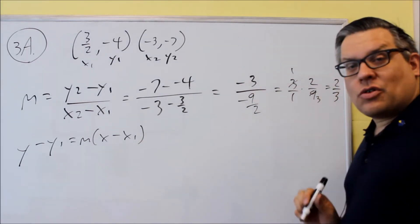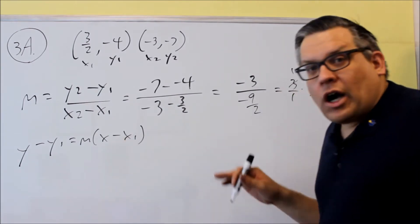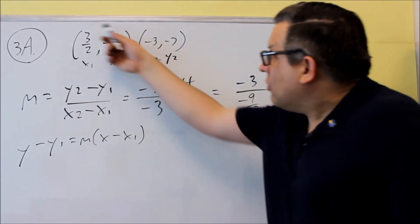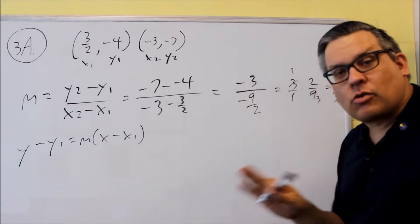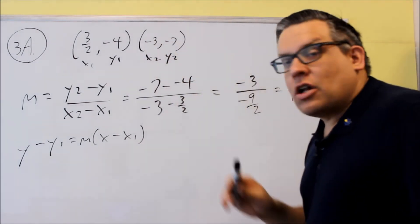The m is going to be our 2 thirds. Now x1 and y1, you don't have to use the first point that we labeled there. You could also use the second one as well. It doesn't matter which one you use, it's still going to get you the same result.